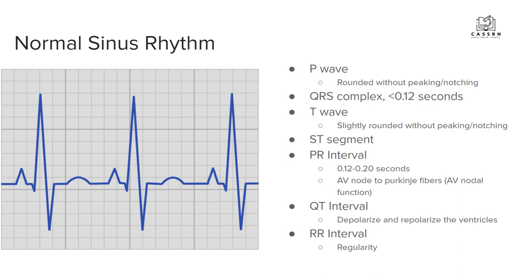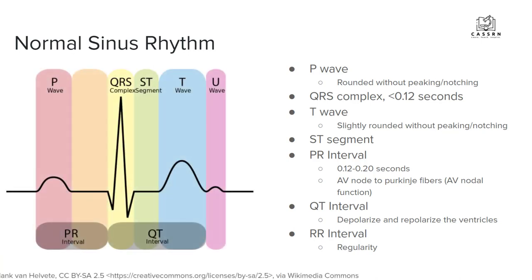Here's another image that might help if you're more color-coded. It's the same breakdown: P wave, QRS complex, T wave, and then you might see a U wave. The PR interval and QT interval are shown here, and the RR interval goes from one R to another R. Regarding the U wave — this is not seen very commonly. If you do see it, it can be indicative of hypokalemia, so just be aware of that.